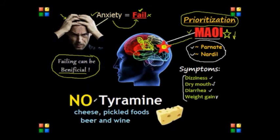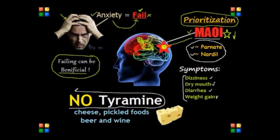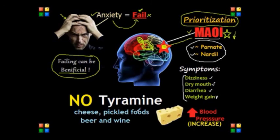Regarding food interactions with MAOIs, patients need to limit foods that contain high levels of tyramine, such as cheese, pickled foods, beer, and wine. Tyramine is an amino acid that helps regulate blood pressure, but if tyramine is combined with MAOIs, the interaction causes dangerously high blood pressure, which can trigger a hypertensive crisis.